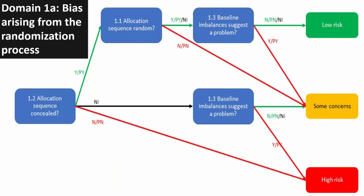Starting with domain 1A, these are the signalling questions for domain 1A and there are no changes to these questions. But I want to say a little bit about question 1.3 for this domain — baseline imbalances suggesting that there might be a problem with the randomisation process.